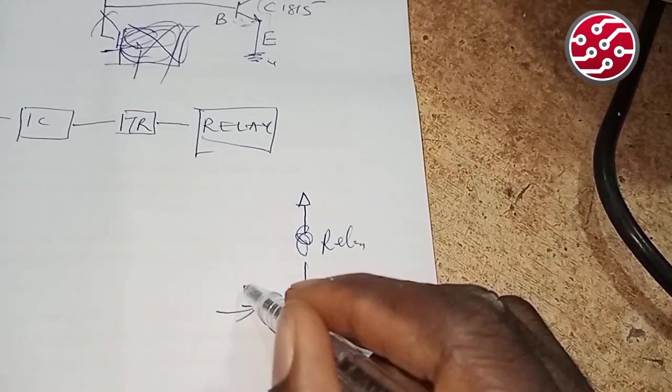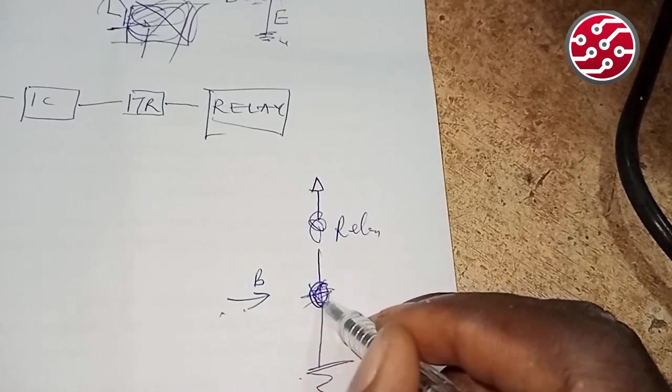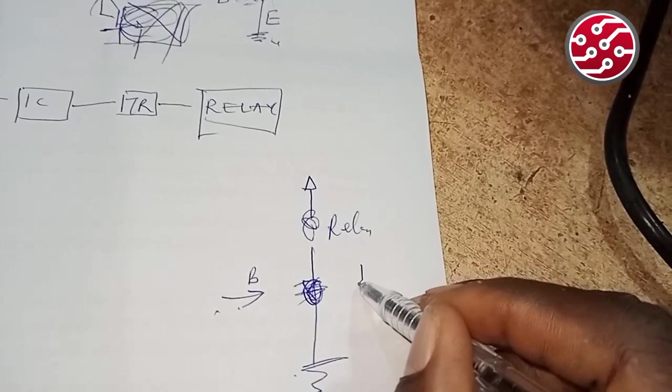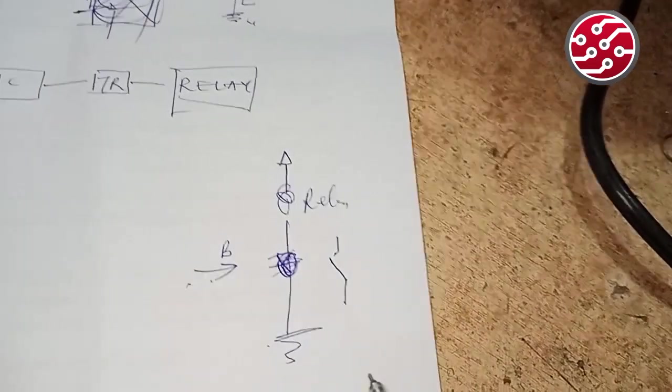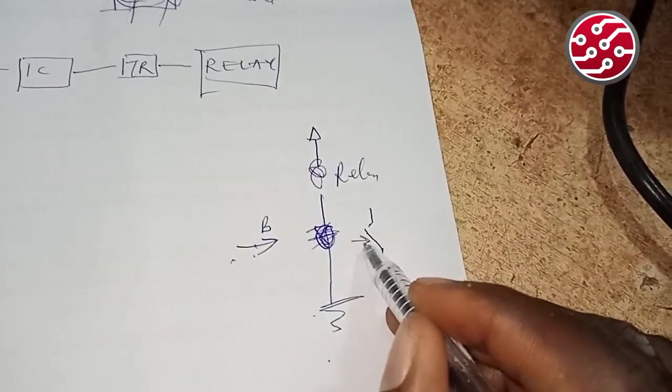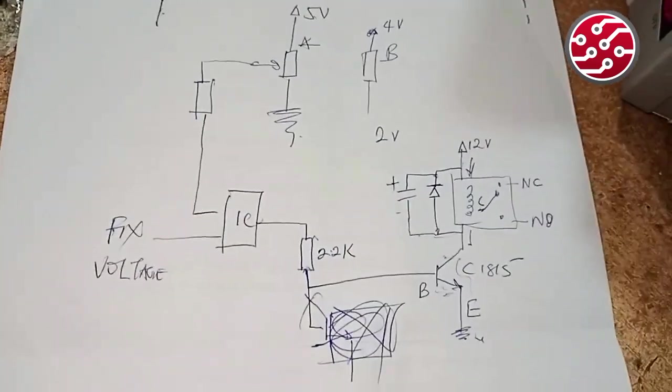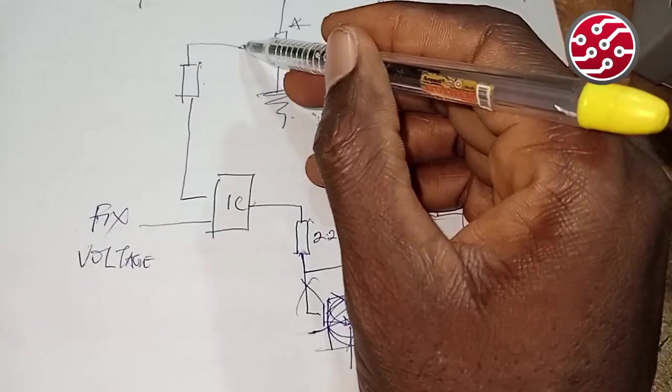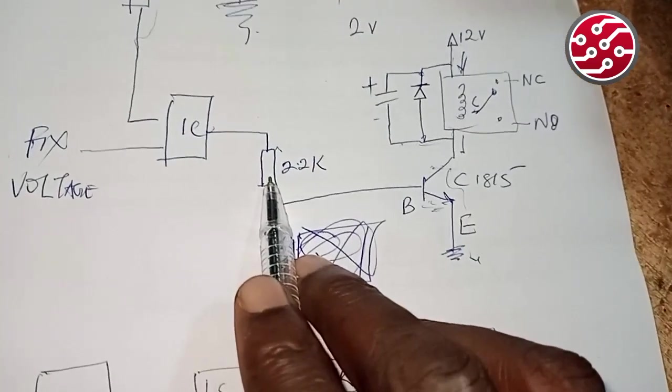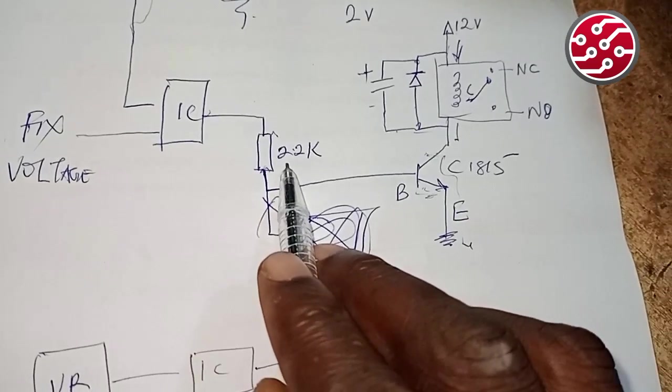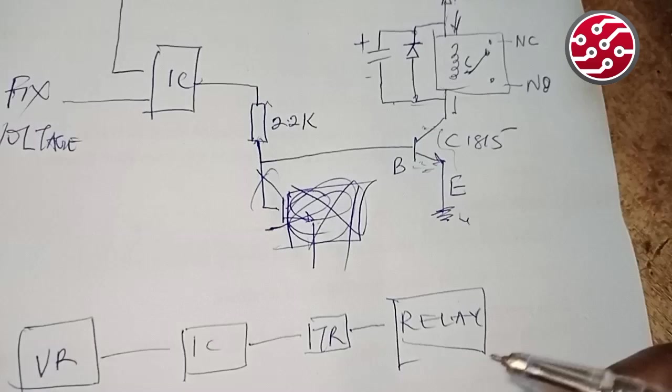And the base, there's a signal sent to fire this switch to get close. So this one fires it and it closes. Don't get confused, it's just like this. So we bias it, we connect here directly to the IC, but it's 2.2k. Almost all of them like using it. Microcontrollers, we use 1k.